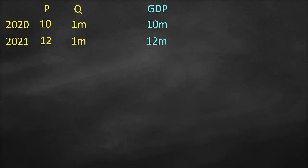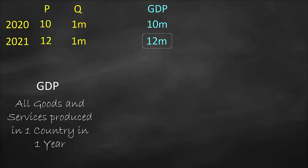So could you please look at the GDP and tell me which year is better — 2020 or 2021? Some of you will compare $10 million with $12 million and say $12 million is bigger, therefore 2021 is better than 2020. Let's return to our definition. Do you remember in the previous video, we defined GDP as all goods and services produced in a country in one year?